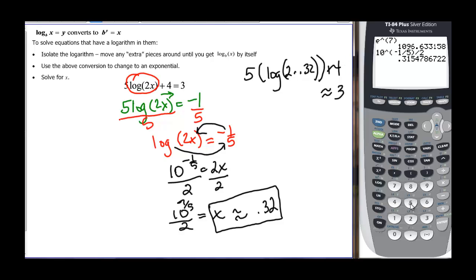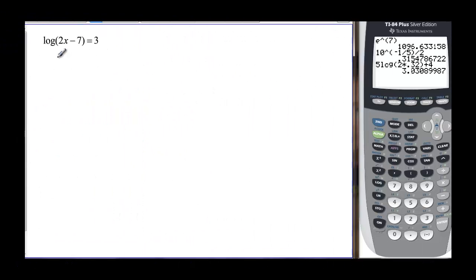but let's plug and chug and see what we'll get. We'll get five times the log of two times 0.32, close the parenthesis, and then outside we add four, and we get 3.03, which is approximately three, so we know that x really is about 0.32.